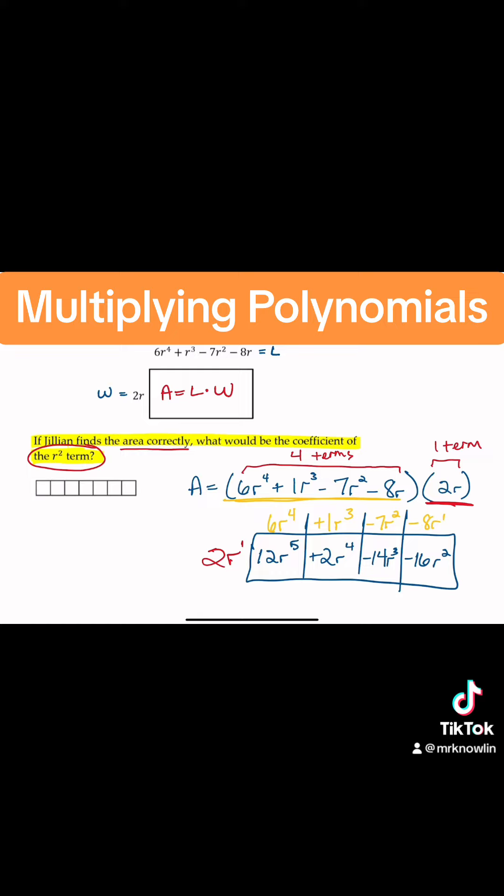And the question asked us about the R squared term - what is the coefficient? The coefficient is negative 16.